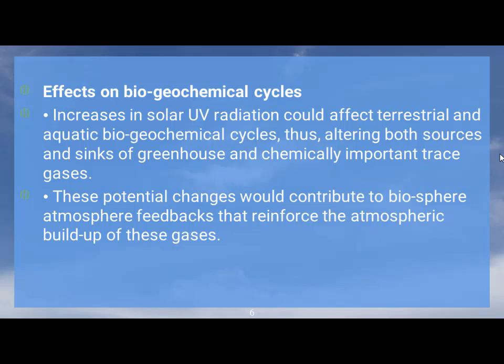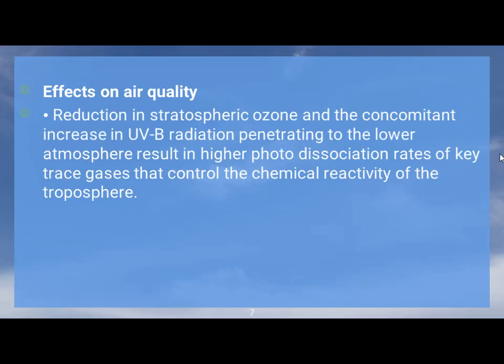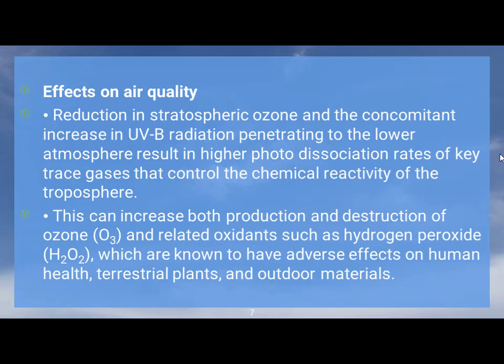Regarding effects on air quality, a reduction in stratospheric ozone and the concomitant increase in UVB radiation penetrating to the lower atmosphere result in higher photo-dissociation rates of key trace gases that control the chemical reactivity of the troposphere. This can increase both production and destruction of ozone and related oxidants such as hydrogen peroxide, which are known to have adverse effects on human health, terrestrial plants, and outdoor materials.